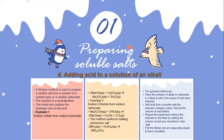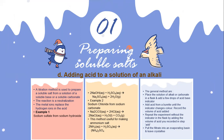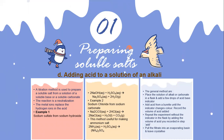The equation for sodium sulfate from sodium hydroxide is: 2NaOH + H2SO4 → Na2SO4 + 2H2O. Example 2: sodium chloride from sodium carbonate. The equation is Na2CO3 + 2HCl → 2NaCl + H2O + CO2. This method is also useful for making ammonium salts.